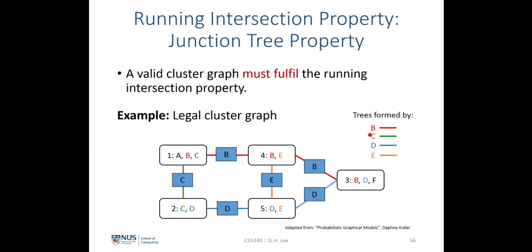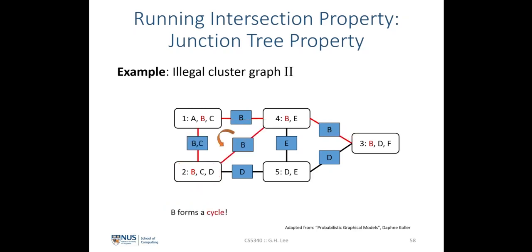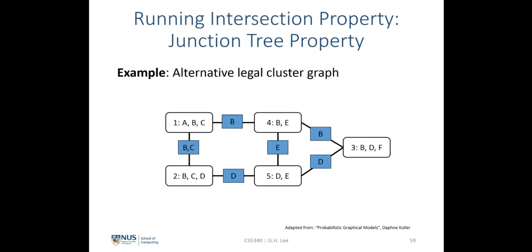Here is an example of an illegal cluster graph where random variable b does not form a tree because there is a disjoint cluster not connected to the main graph. Here is another illegal cluster graph where random variable b forms a loop, which violates the running intersection property — hence this is not a valid cluster graph. Here is another legal cluster graph where random variable b forms a chain, which is a valid tree. I leave it to you to verify the running intersection property for all other random variables.